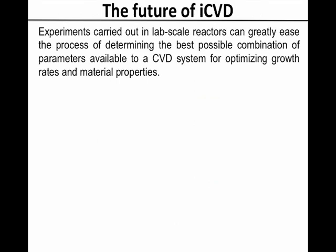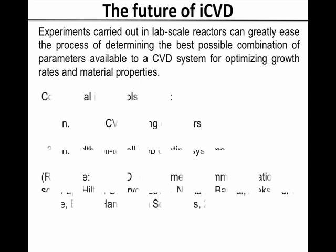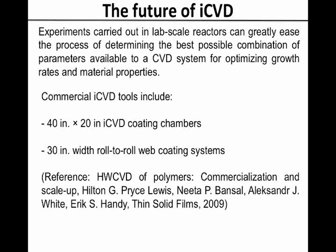Commercial scale batch and roll-to-roll iCVD reactors have been shown. Commercialisation of the iCVD method requires the accurate scale-up of lab-scale small reactors. The most critical issues affecting the throughput of a commercialised reactor are the film growth rate and the effective utilisation of expensive precursors. Experiments carried out in lab-scale reactors can greatly increase the process of determining the best possible combination of parameters for optimising growth rates and material properties.